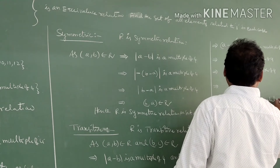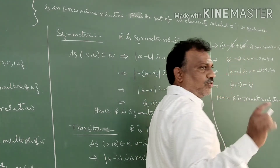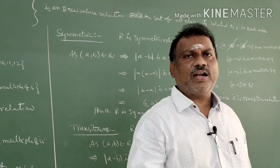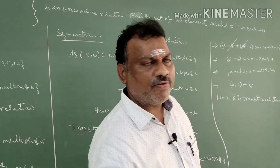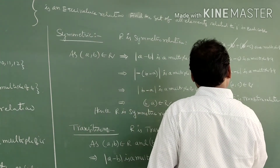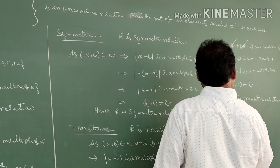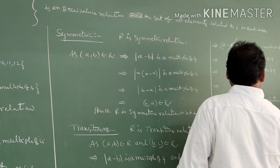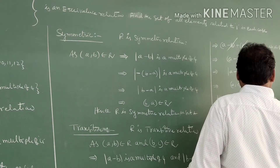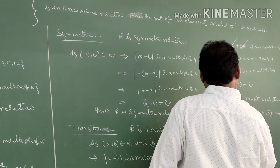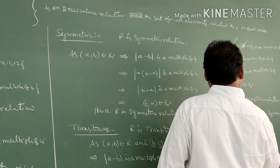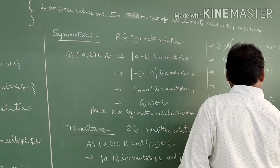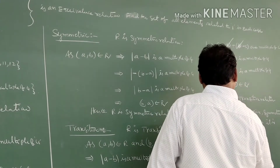Since R satisfies reflexive, symmetric, and transitive, any relation satisfying all three is an equivalence relation. R satisfies reflexive, symmetric, and transitive. Hence R is an equivalence relation.